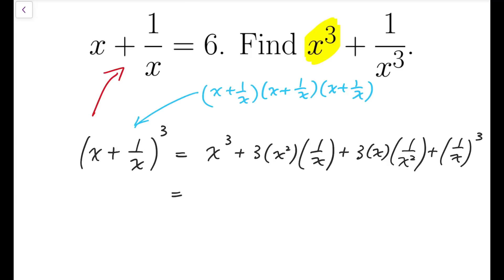And then simplifying, you're going to get x cubed plus 3x plus 3 times 1 over x plus 1 over x cubed. Now, the yellow part will be the expression that we have to find. Our final answer.